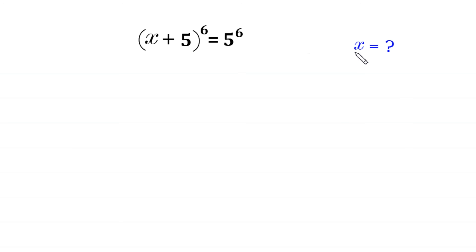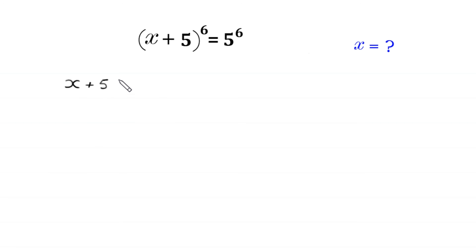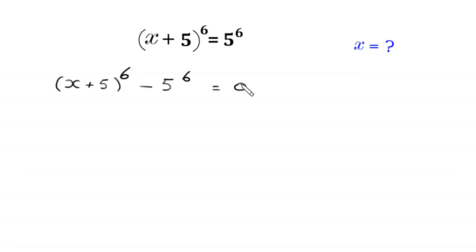Let us start by moving 5 to the power 6 to the left hand side. Then this equation will become: x plus 5, whole to the power 6, minus 5 to the power 6, is equal to 0.